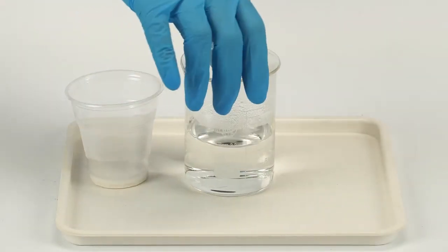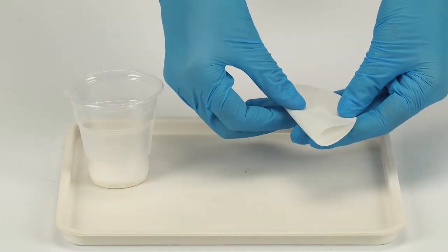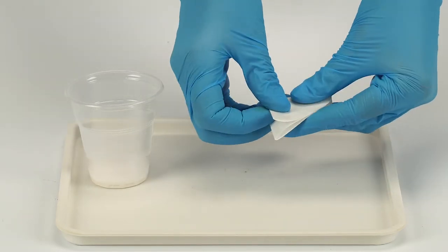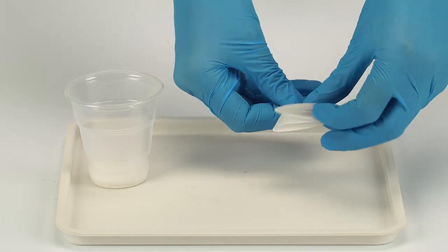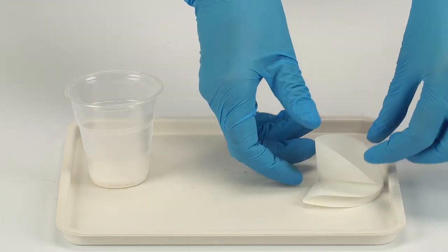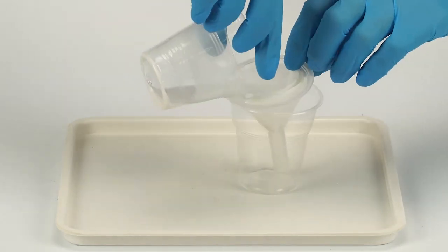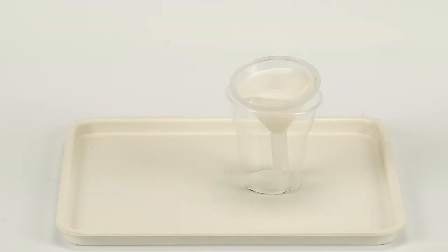Now, filter the solution off. Fold a piece of filter paper to make a filter cone. Assemble the filter. Put the plastic funnel inside a clean plastic cup and the filter paper inside the funnel.